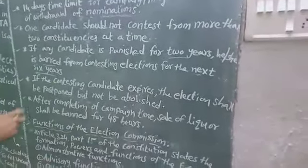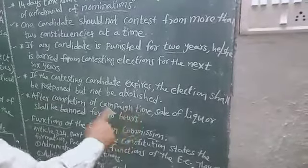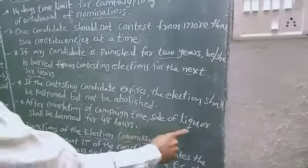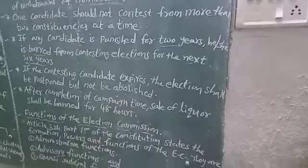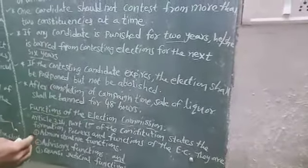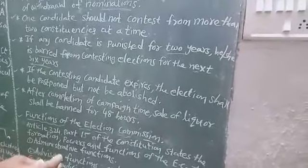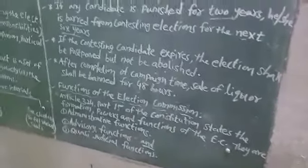After the completion of the campaign time, the sale of liquor shall be banned. Before the election, a ban is imposed 48 hours before the election. These are important rules.